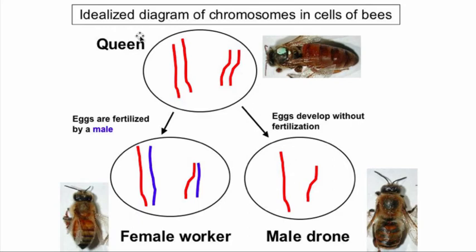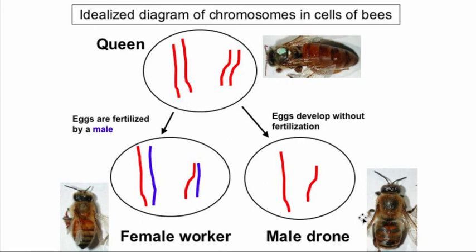Here we see an example of bees. The queen in the bee colony is the only one that reproduces — similar to ants. The queen bee is diploid and produces eggs. If those eggs get fertilized by a male, the egg originally had the red chromosomes from the female and the male contributed the blue chromosomes; the fertilized egg gives rise to a diploid organism, a female worker. If the eggs do not get fertilized and they start developing without fertilization — this is called parthenogenesis — the resulting organism is a haploid male.